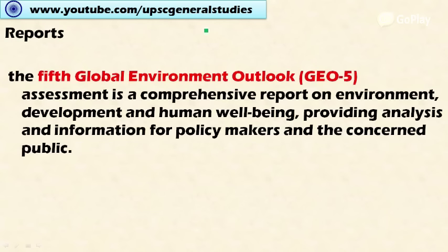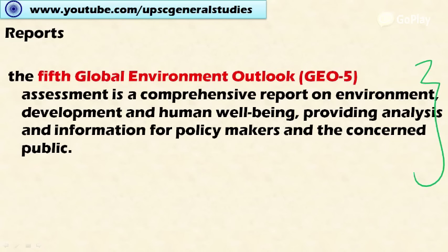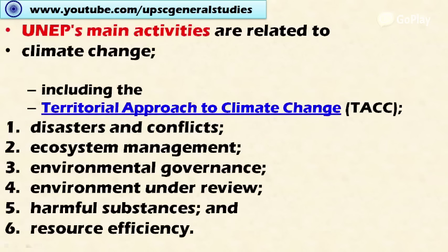UNEP publishes various summary reports to assist developing countries in policy formulation. The most important recent document is the Fifth Global Environment Outlook, GEO 5, a comprehensive report on environment, development, and human well-being. It provides analysis and information for policy makers and the public to move towards sustainable development.